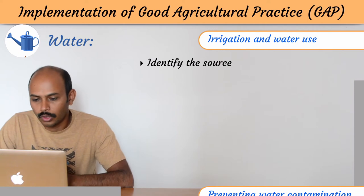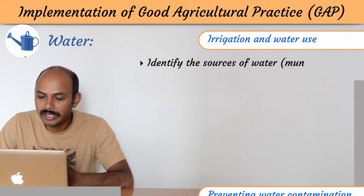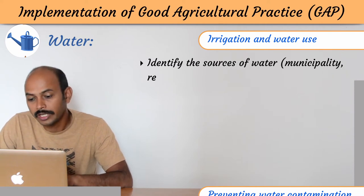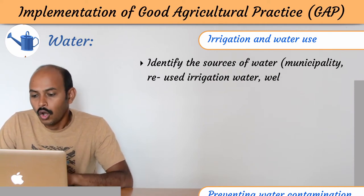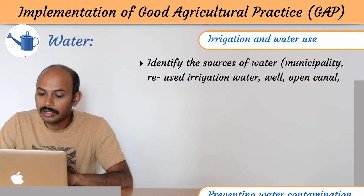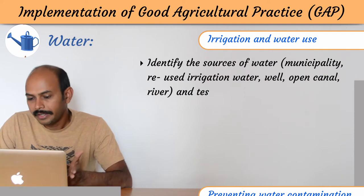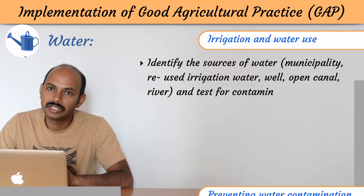Identify the source of water: municipality, reused irrigation water, well, open canal, river — and test for contaminations.